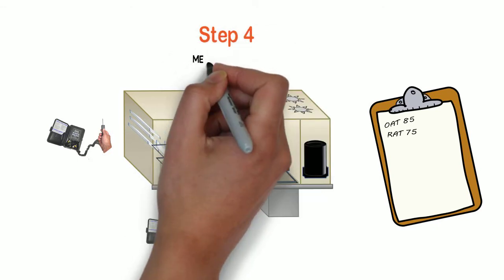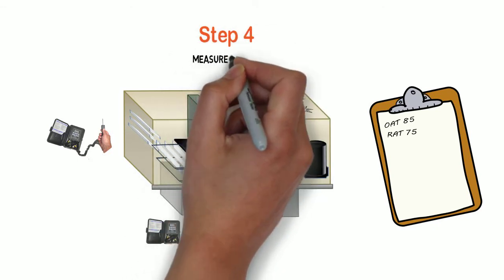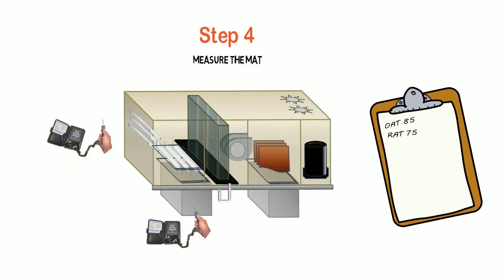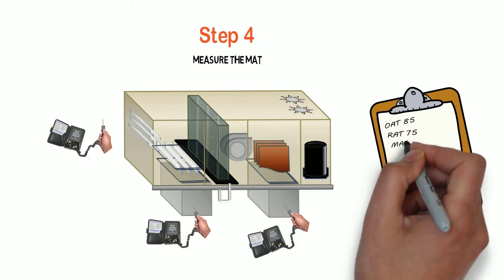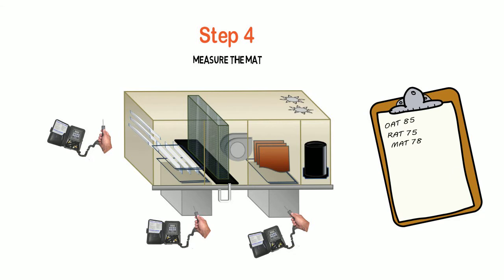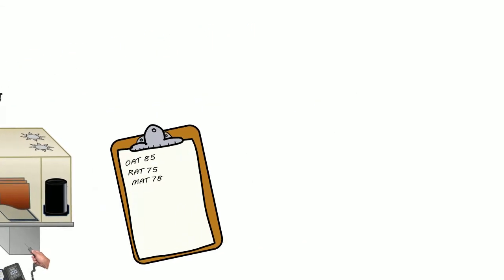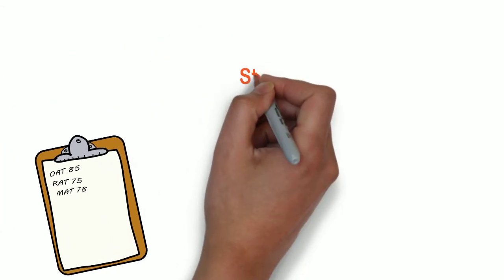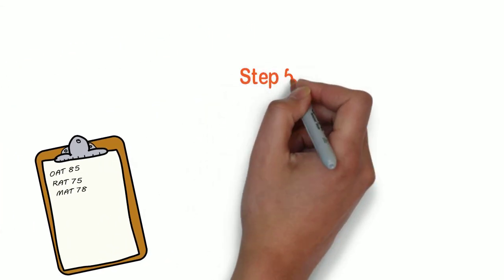Step four: we're going to measure the mixed air temperature in the supply duct, again with the heating and cooling turned off and the fan on. In our case, our mixed air temperature is 78 degrees. Write it down.